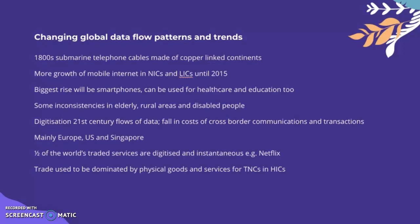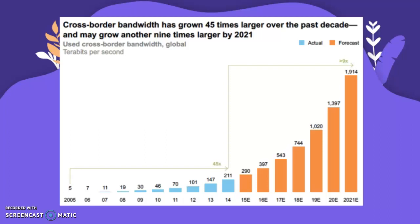Half of the world's traded services are now digitised and instantaneous — such as Netflix and Amazon. Trade used to be dominated by physical goods, but now it's much more services and data. A graph showing cross-border bandwidth shows it has grown 45 times larger over the past decade and might grow another nine times larger.